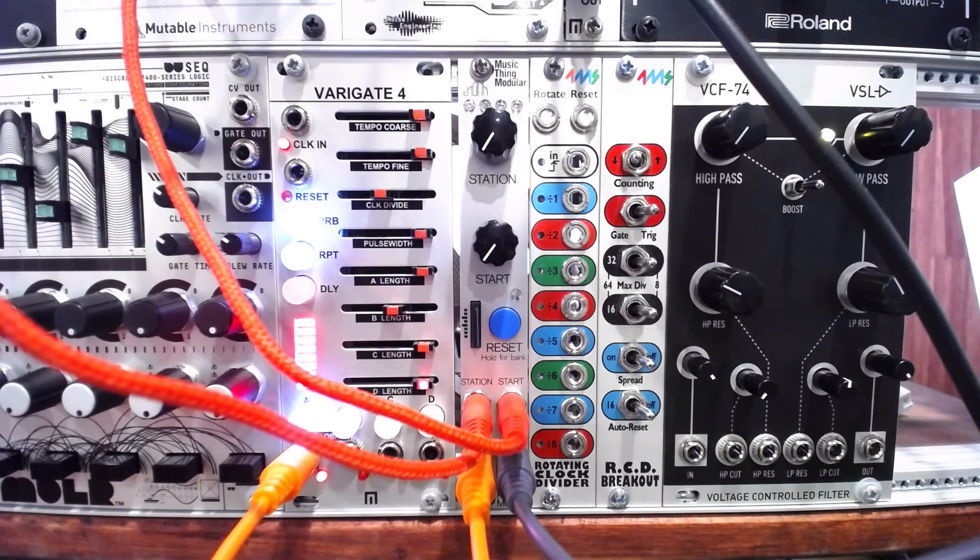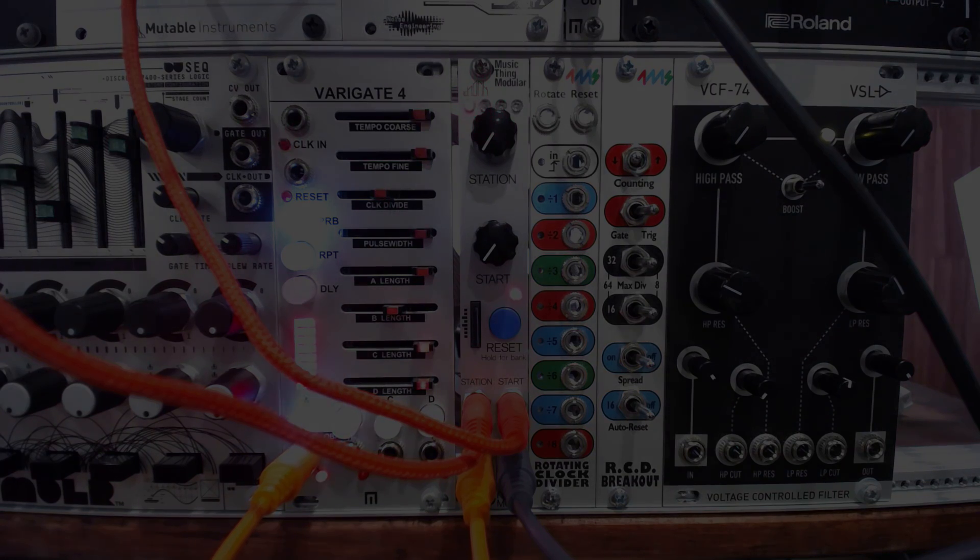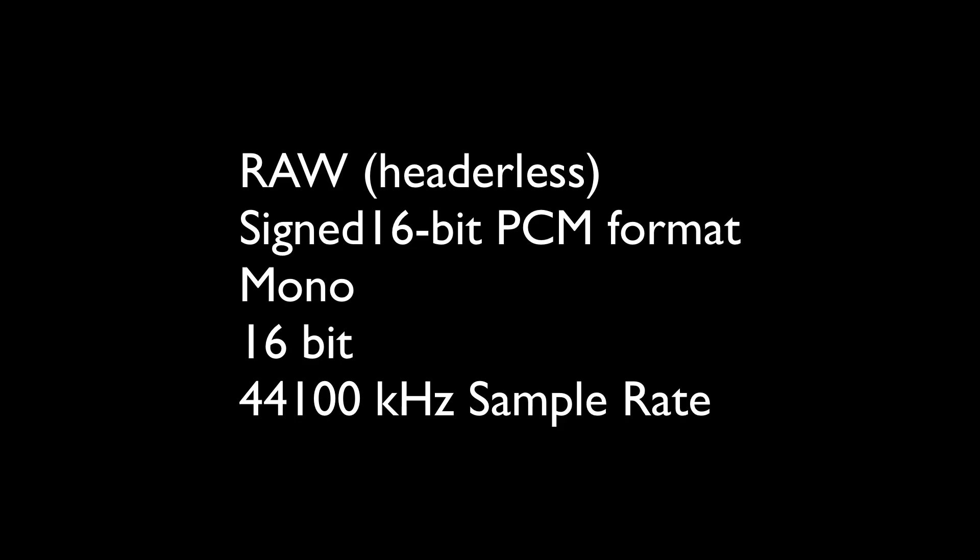Radio Music requires a specific audio file type called a RAW file. Files must be mixed in mono at 16 bits and a sample rate of 44.1 kHz, and saved as signed 16-bit PCM RAW headerless audio files. Additionally, the files must be named in the classic DOS format of up to eight uppercase letters or numbers with the .raw suffix.